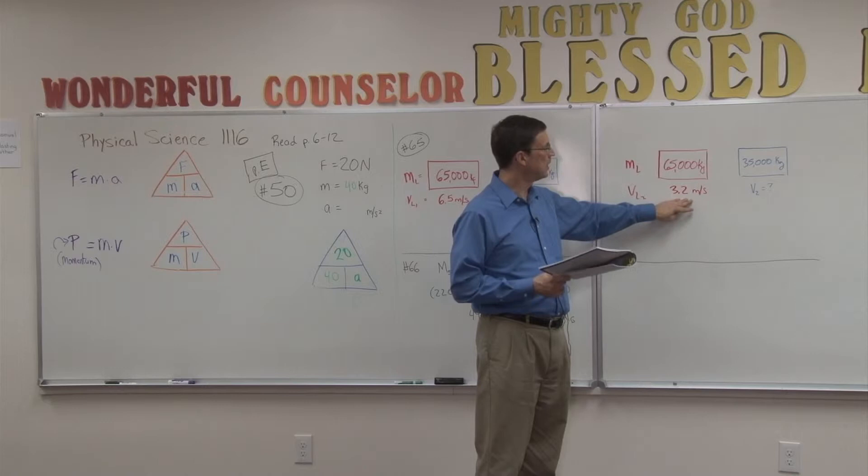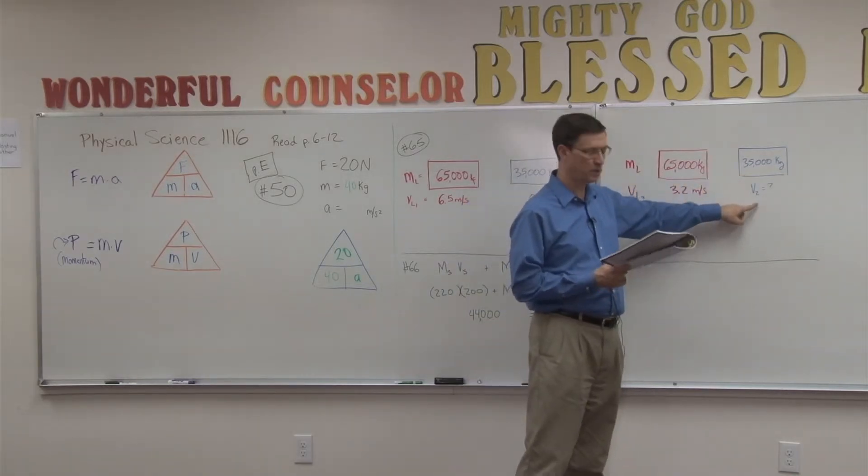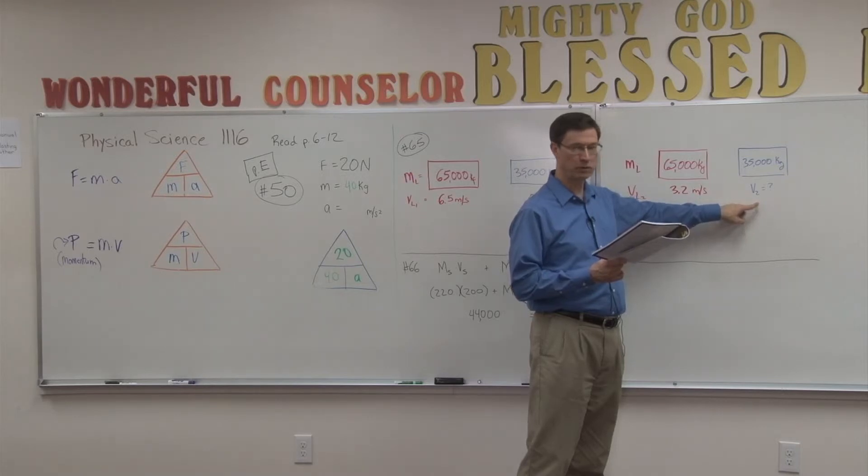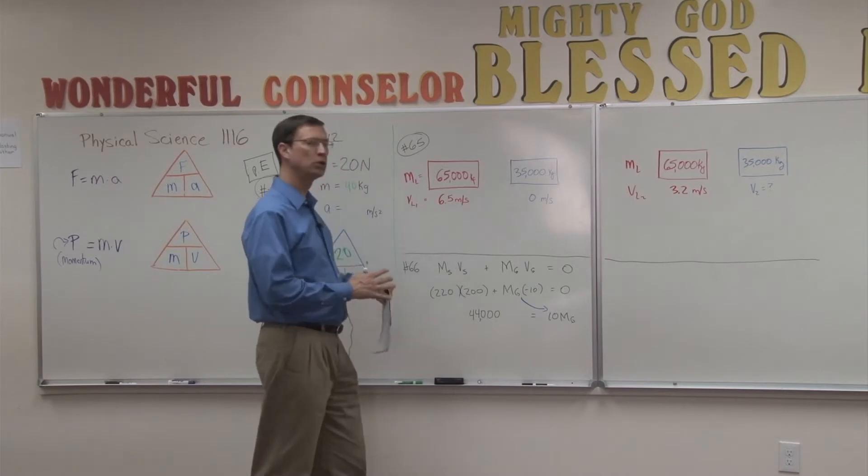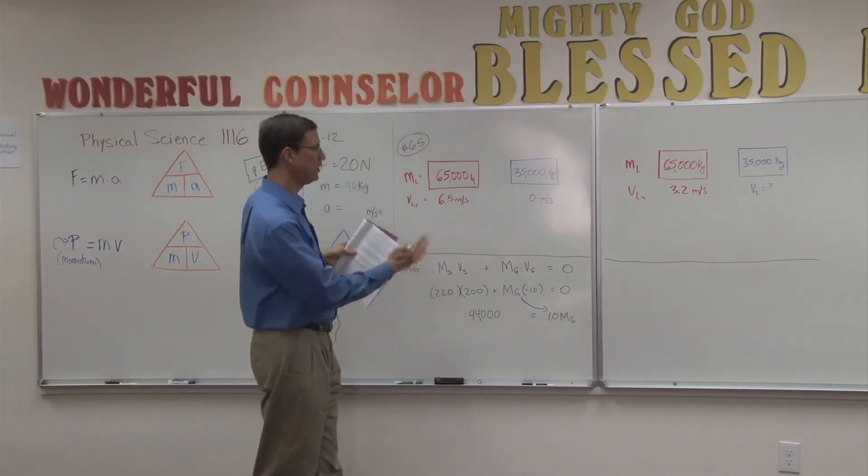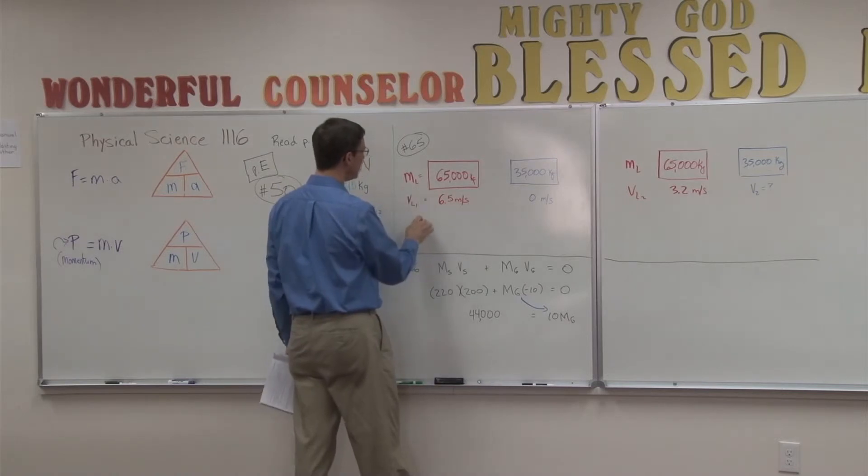So its velocity is now 3.2, and the question is, what is the speed of the empty car after the collision if it was not moving, hence the zero, before the collision?